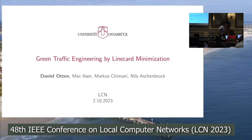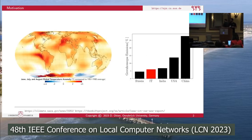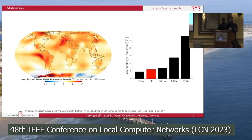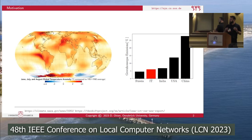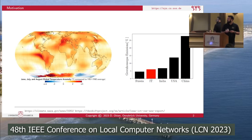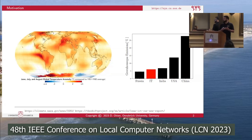Thank you for the introduction. Today I will present our work 'Green Traffic Engineering by Line Card Minimization.' When we look at our modern world, we are confronted with news about climate change on an almost daily basis, and we all know we need to reduce our energy consumption to reduce our overall emissions of greenhouse gas. One field that is often overlooked is the greenhouse gas emissions caused by our IT infrastructure.